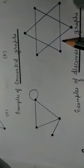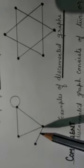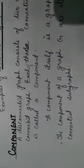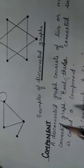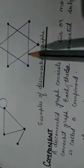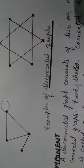Here we have examples of disconnected graph. A disconnected graph consists of two or more connected graphs. Each of these connected subgraphs of the disconnected graph is called a component, and a component is itself a graph.